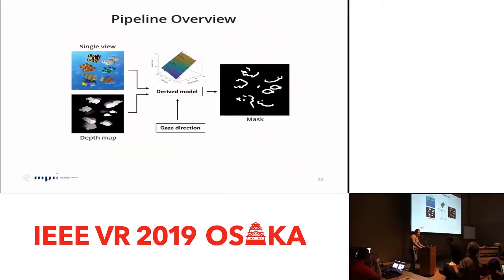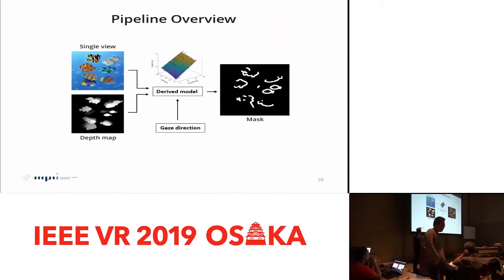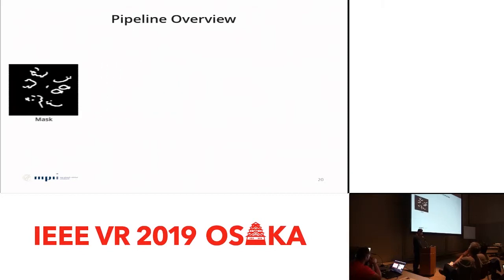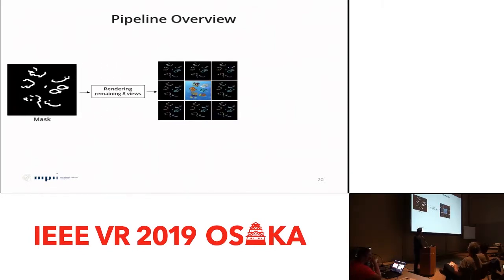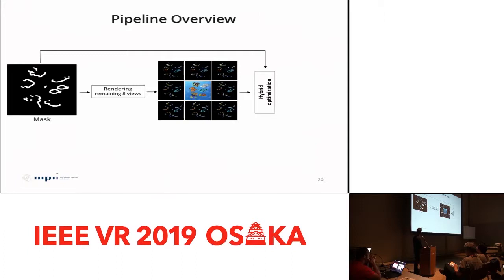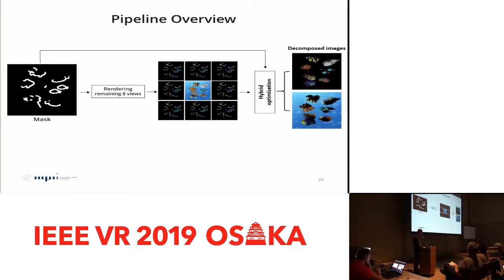Based on the perceptual experiment, we have a model that takes a single view, depth map, and gaze direction as inputs, and predicts a mask indicating the region that requires light field rendering. We then render the remaining eight views only at positions in the white region of the mask, using NVIDIA OptiX ray tracing. Our hybrid optimization applies light field synthesis for the mask region, and linear blending for the rest of the scene to decompose images for the front and back displays.